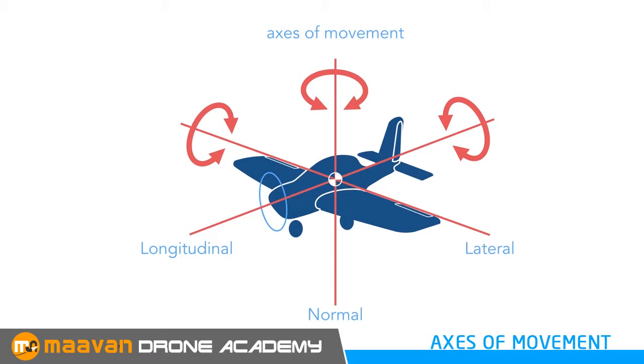The aircraft's principal axes are normal axis drawn from top to bottom, lateral axis drawn parallel to the wings and longitudinal axis drawn from tail to nose. Each axis is perpendicular to the other two axes. Let's look at each individually.